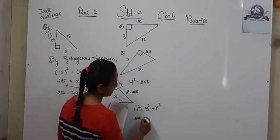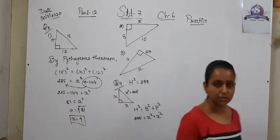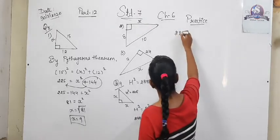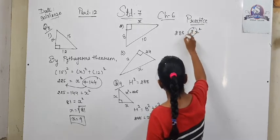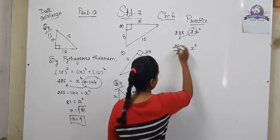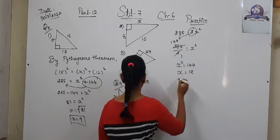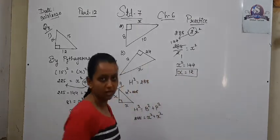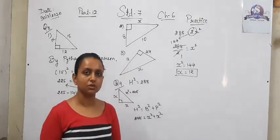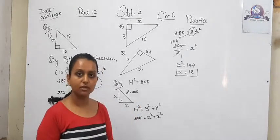So 288 equals 2X squared. Dividing both sides by 2: X squared equals 144. Therefore X equals square root of 144, which is 12. Since no units like centimeters were specified in the problem, the length of each leg is 12 units.